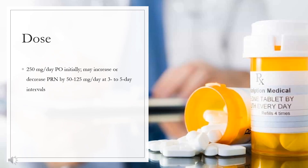Dose — Type 2 diabetes. Administer 30 minutes before meal to improve absorption. Middle-aged stable diabetic: 250 mg per day PO initially, may increase or decrease PRN by 50–125 mg/day at 3–5 day intervals. Older patients: 100–125 mg/day PO initially, may increase or decrease PRN by 50–125 mg/day at 3–5 day intervals.